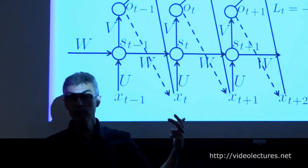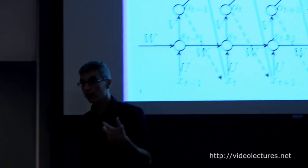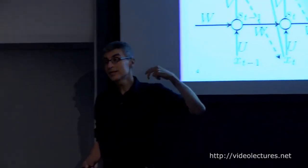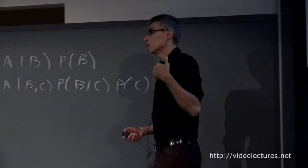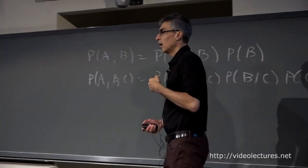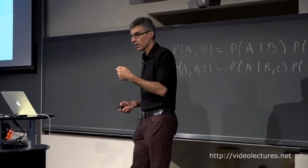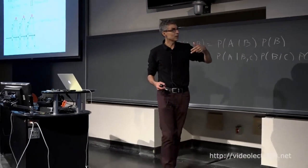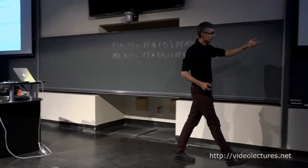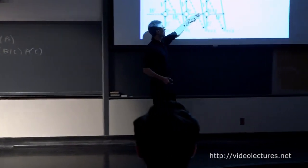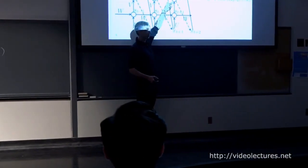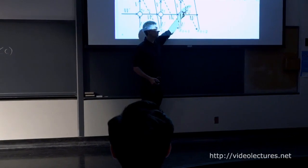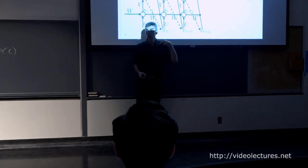That's how we generate a sequence. Once we can compute those probabilities, we can sample from them. We use the sampled symbol as input to the next time step, feed the update of the next state, compute again the probability for the next symbol, sample that and stick it in as the next input, and so on. This way we can generate a sequence.